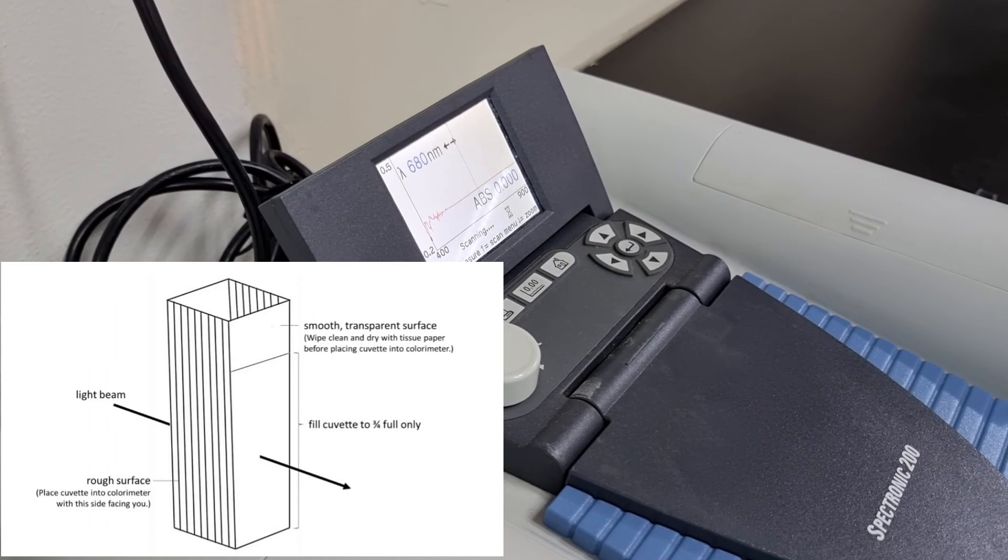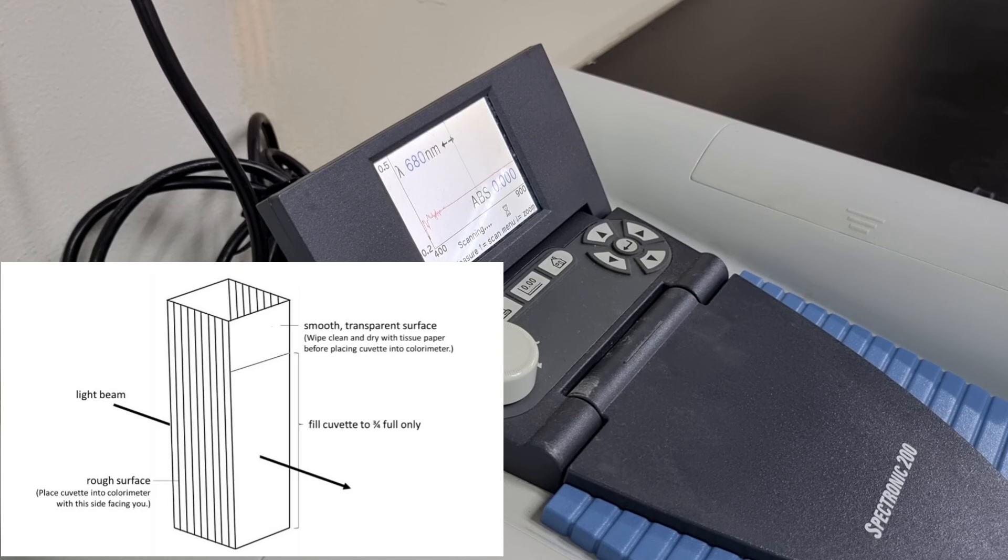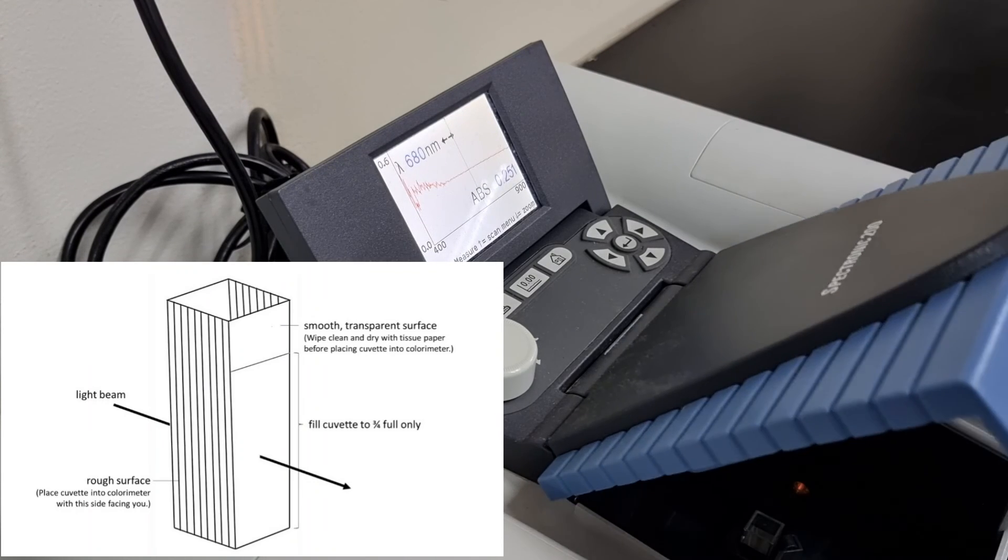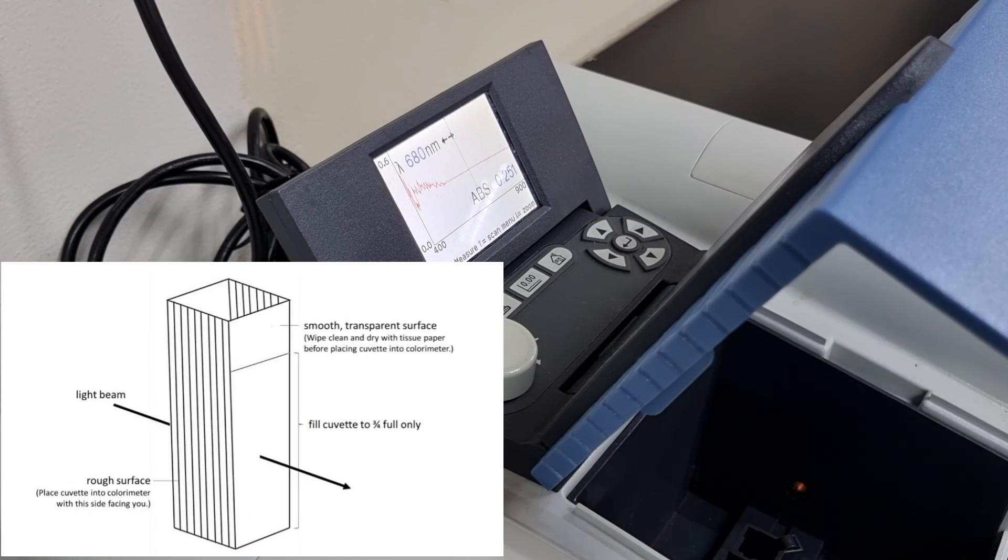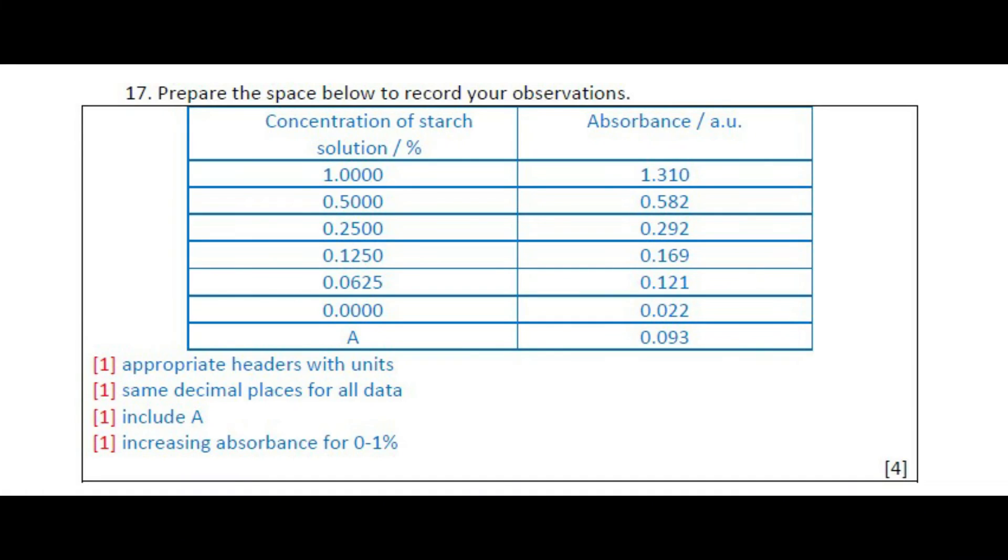Absorbance reading shows how much light is absorbed by the solution. So the higher the color intensity, the higher the absorbance should be. This is an example of the results you should be able to get. You can see here that the trend is there. Now other than that, for the previous table as well as this table, make sure that all your concentrations as well as the control, which is 0%, and the unknown is in the table.